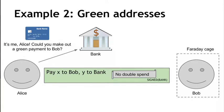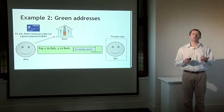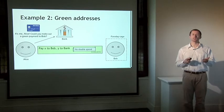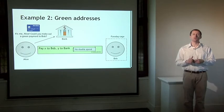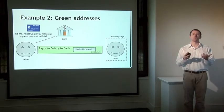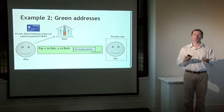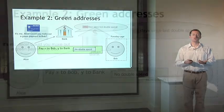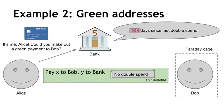That bank-controlled address comes with a guarantee that the money will never be double spent. So as soon as Bob sees that this transaction is signed by the bank, if he trusts the bank's guarantee not to double spend the money, he can accept that that money will eventually be his when it's confirmed in the blockchain. Now notice that this is not a Bitcoin-enforced guarantee — this is a real-world guarantee. Bob has to trust that the bank cares about its reputation and won't double spend. The bank can say: you can look at my history, I've been using this green address for a long time and I've never double spent, therefore I'm very unlikely to do so in the future.